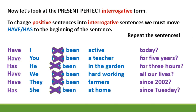Repeat the sentences: Have I been active today? Have you been a teacher for five years? Has he been in the garden for three hours? Have we been hardworking all our lives? Have they been farmers since 2002? Has she been at home since Tuesday?